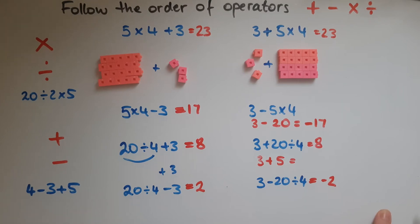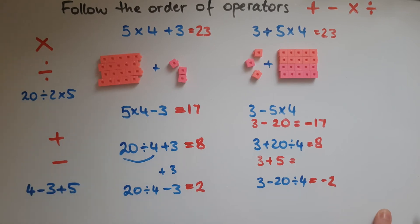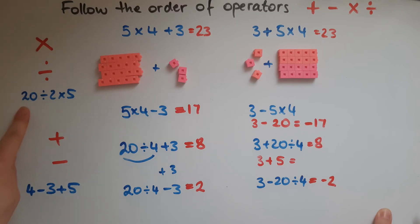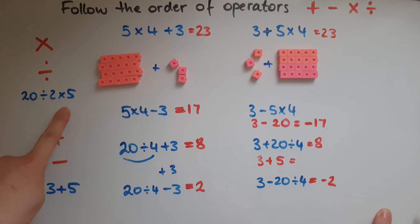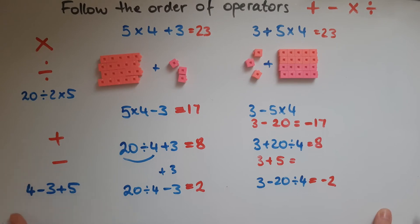To summarise: multiplication and division come before addition and subtraction. Within multiplication and division, they are equals — you just follow the order they are presented in, just like reading a sentence. And the same thing happens within addition and subtraction: just follow the order they are presented in.